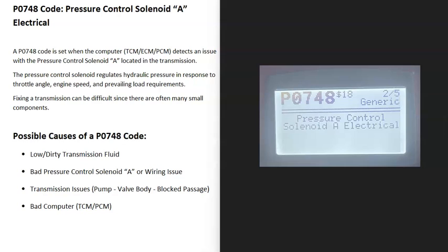Today I'm talking about a P0748 code, what it is and how you go about fixing it. A P0748 code is a pressure control solenoid A electrical issue.